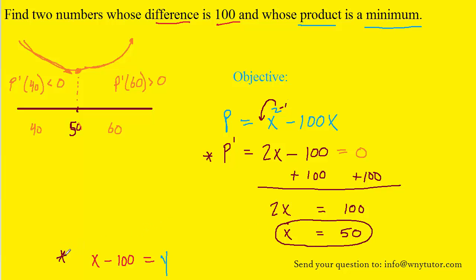We recall when we solved the constraint equation for y that y equals x minus 100. So if we plug in our x, we would easily be able to solve for y, and we would see that y equals negative 50. So there is the second number.